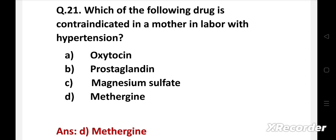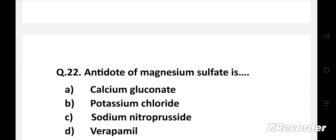Question: Antidote of magnesium sulfate is - Option A: Calcium gluconate, B: Potassium chloride, C: Sodium nitroprusside, D: Verapamil.